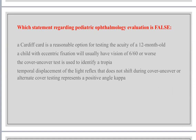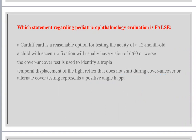The cover-and-uncover test identifies tropias. Temporal displacement of the light reflex that doesn't shift during cover-and-uncover may indicate apparent deviation. Temporal displacement represents negative angle kappa — not positive. Normally, the reflex is slightly nasal. If temporal, it is negative angle kappa; if more nasal than usual, it is positive angle kappa.